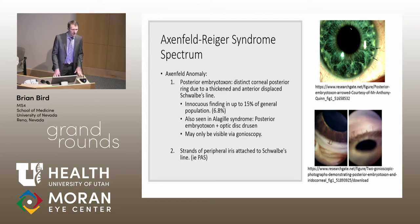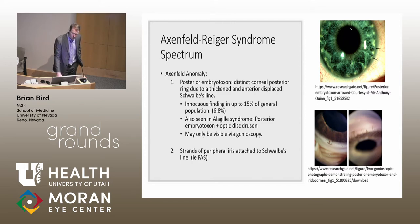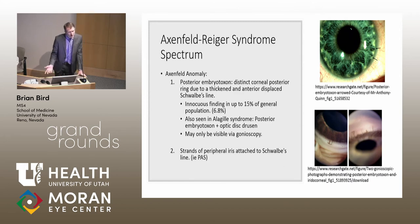To dig into the spectrum, starting with the most benign: Axenfeld anomaly involves posterior embryotoxon plus iridocorneal stranding. Posterior embryotoxon itself is found in a significant portion of the population — some papers estimate about 15%, but a Nature paper from 2004 using about 700 patients found the prevalence was approximately 7%. It's innocuous in most people, but it can be associated with more severe syndromes including Axenfeld-Rieger syndrome.